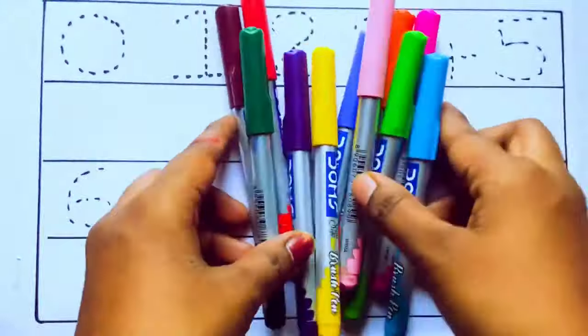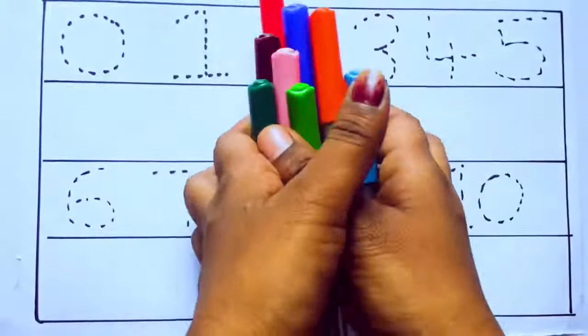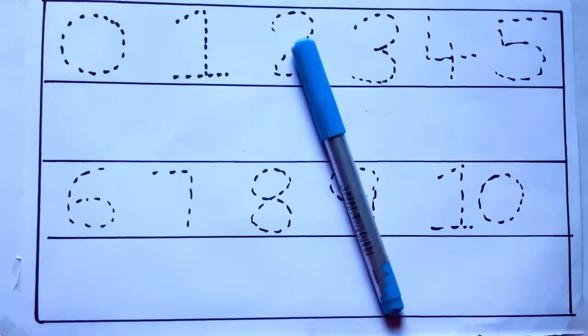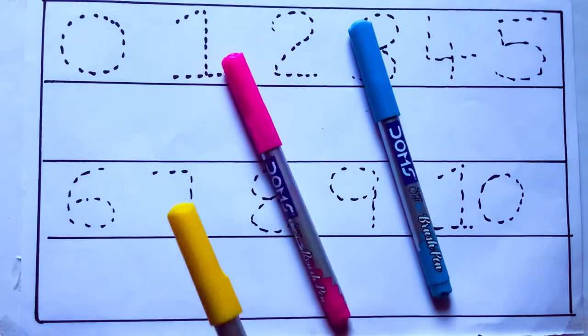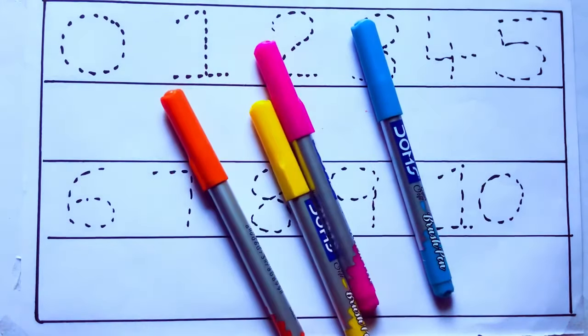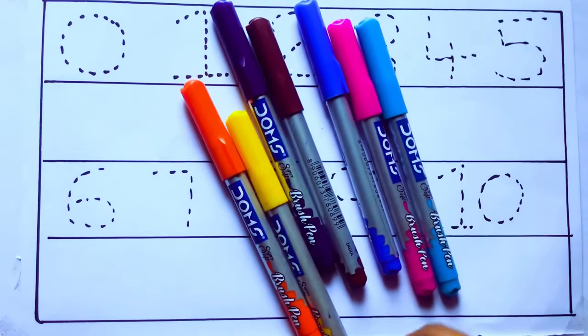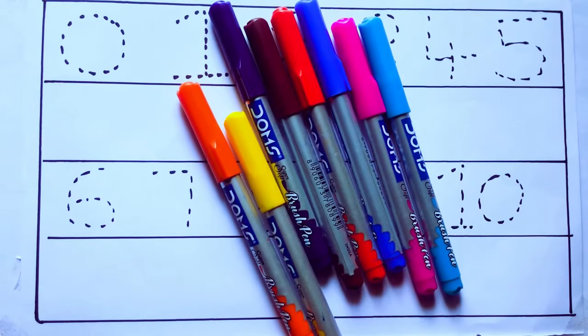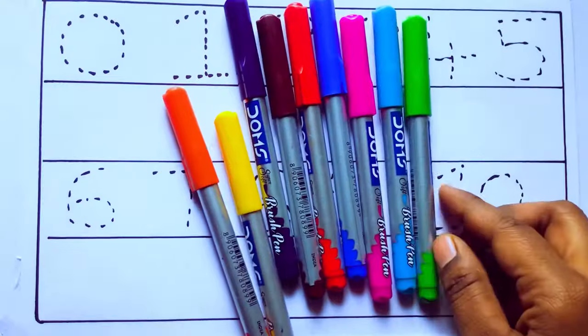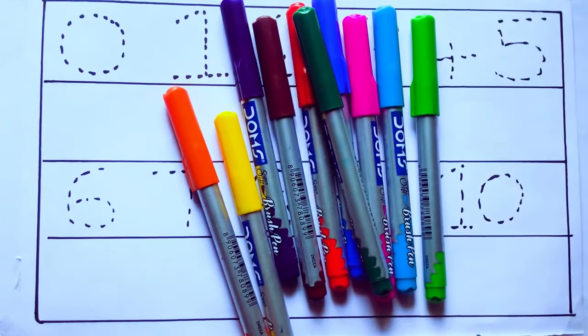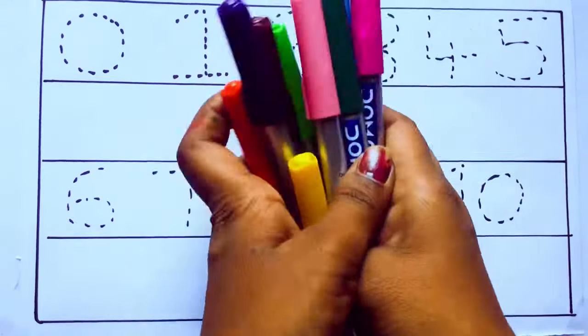Let's learn some colors. These are all the color pencils. Let's learn the names. Sky blue color, pink color, yellow color, orange color, violet color, blue color, brown color, red color, green color, and pink color.